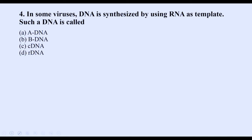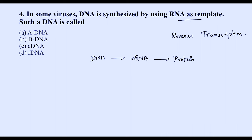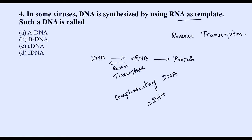Question four: in some viruses, DNA is synthesized using RNA as a template. This process is called reverse transcription, carried out by the enzyme reverse transcriptase. When DNA is formed from RNA, it is called complementary DNA, or cDNA. The correct option is C — cDNA.